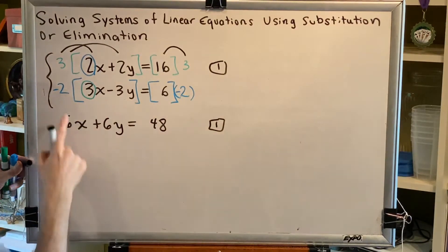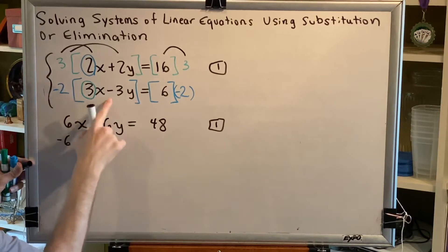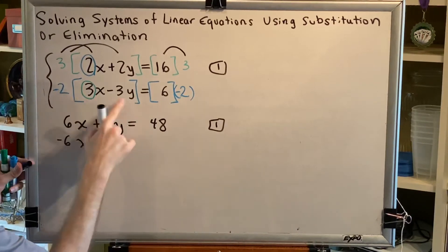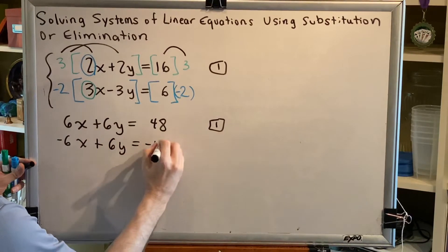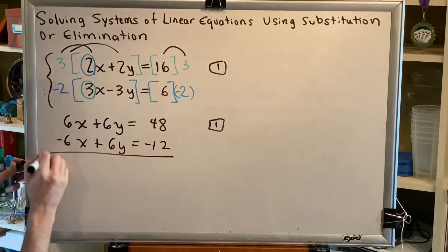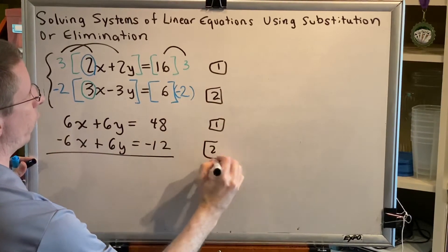We'll distribute here. Negative 2 times 3x is negative 6x. Negative times negative is positive. 2 times 3y is 6y equals negative 2 times 6 is negative 12. And we have now rewritten equation 2 to be in our new form.